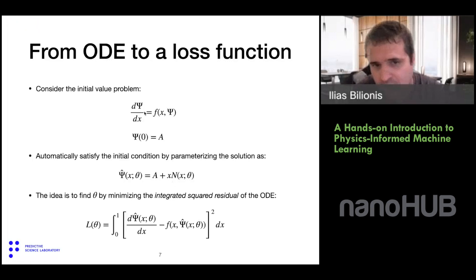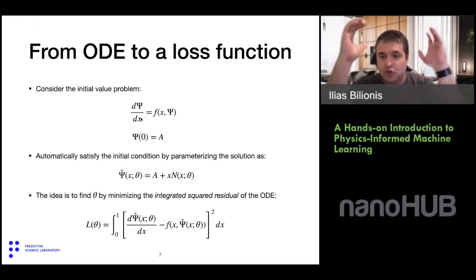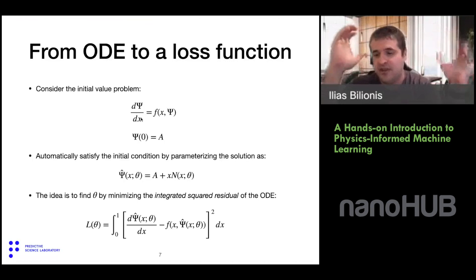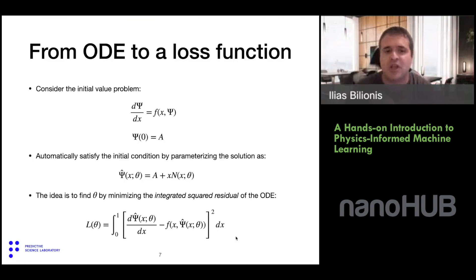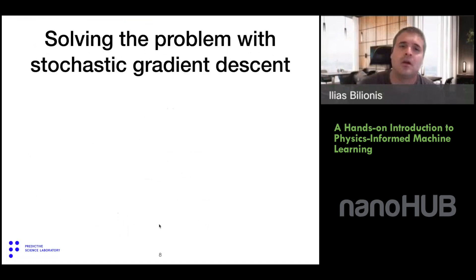Here's the idea presented by Lagaris in 1997. You need to make a loss function to train the neural network such that minimizing the loss function is equivalent to solving the ODE. You take the differential equation, move everything to one side, square it — creating the squared residual of the differential equation — and then integrate over all x's from zero to one. If you minimize this exactly, bringing it down to zero, you have found a neural network that solves the ODE. That's the idea.